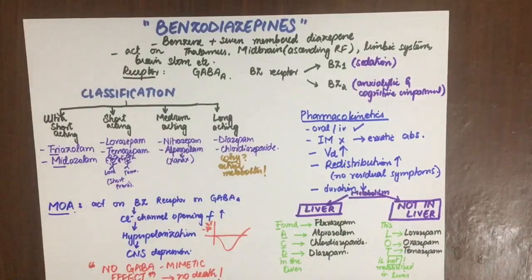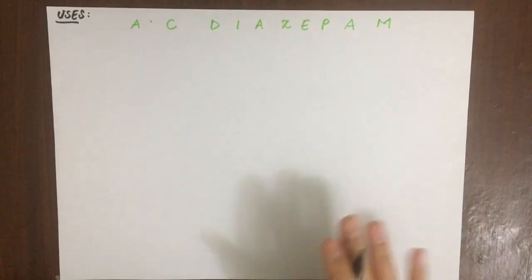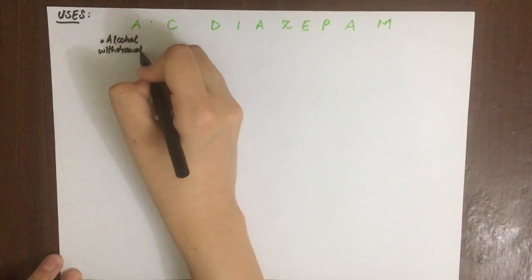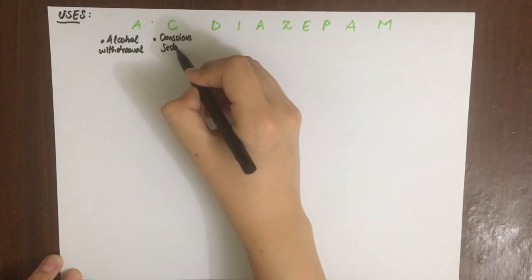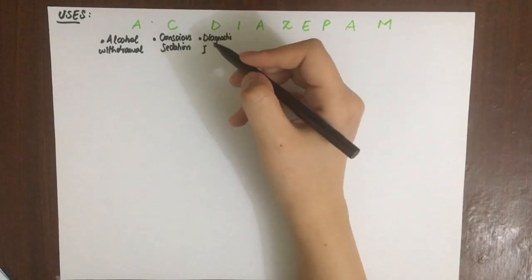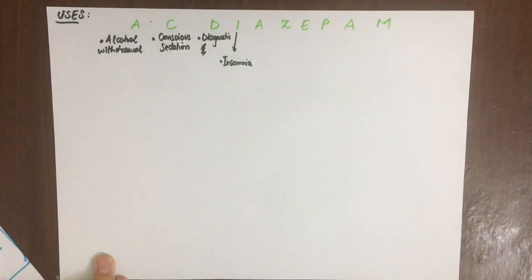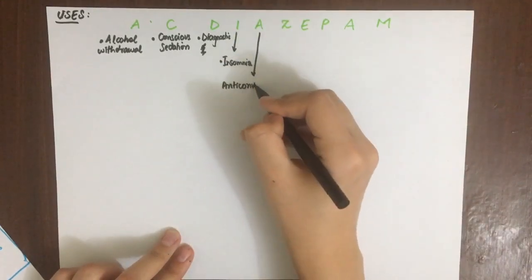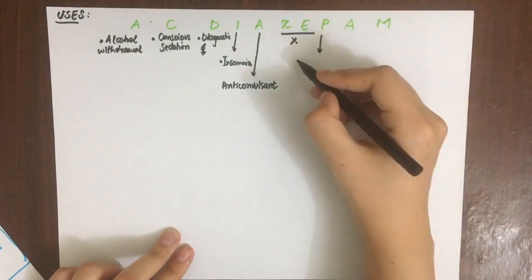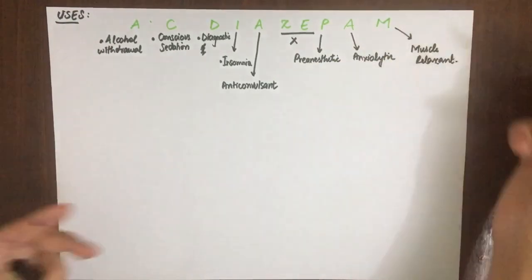The mnemonic for the uses of benzodiazepines is 'AC diazepam.' A is for alcohol withdrawal, since alcohol is a CNS depressant and those going through withdrawal can benefit. C is for conscious sedation, a special type where the patient can cooperate during minor surgical procedures such as endoscopies. I is for insomnia, since benzodiazepines cause sedation. They are also used as anticonvulsants to control life-threatening seizures.